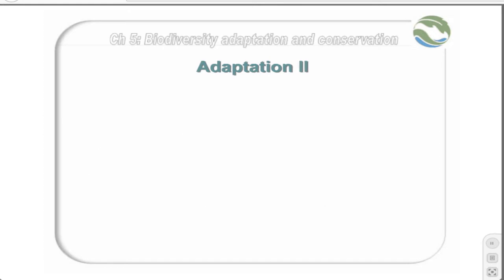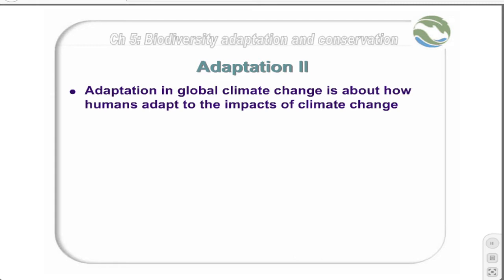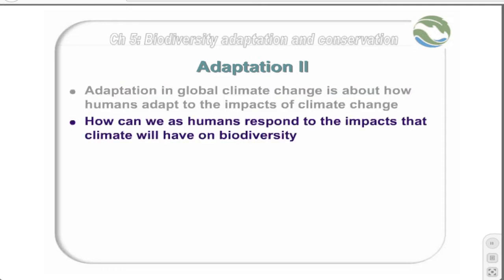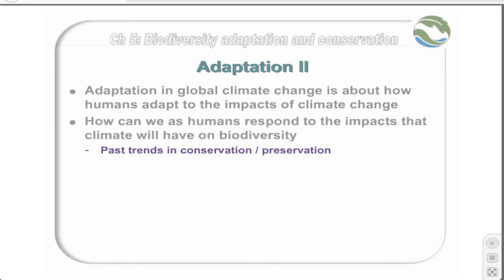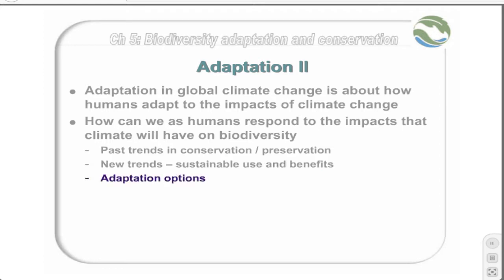Our main focus in this adaptation section is not on other species' adaptation processes, but rather on the adaptation options available to humans to ensure that we minimize species loss as a consequence of climate change. We will firstly look at past trends in conservation and preservation to understand what has led to the current state of conservation areas in the sub-region. We will then consider new trends, particularly strategic conservation planning tools, and finally look at adaptation options available to society to minimize climate change-driven species extinction.